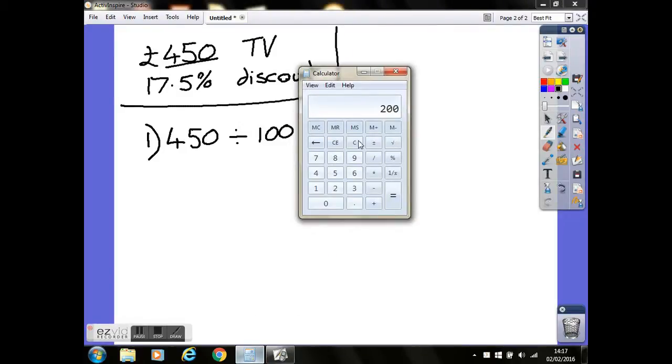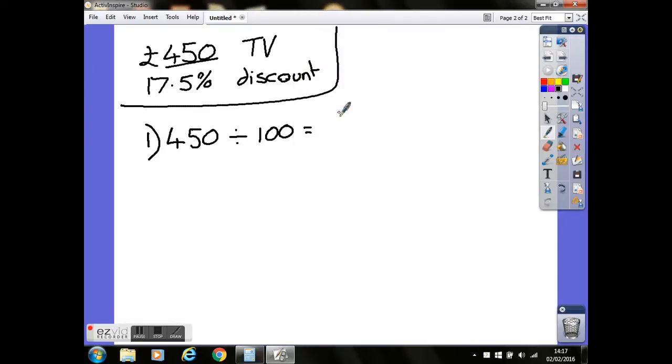450 divided by 100 equals 4.5. Remember what we said with the last one: when we're looking at currency, we need two numbers after the decimal, so that's £4.50 as our 1%.